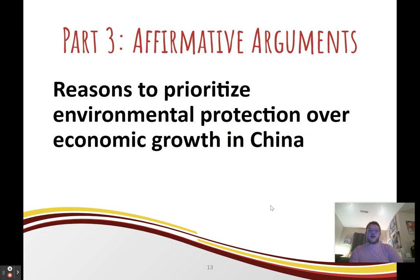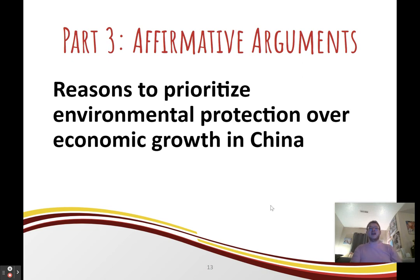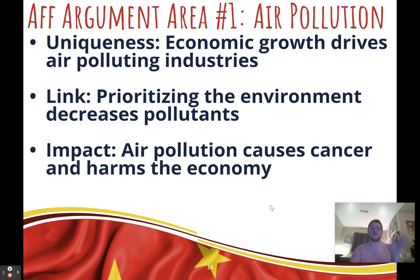Now let's talk about the best affirmative arguments. I have ten ideas listed in alphabetical order — not best to worst. Each argument is a reason why we must prioritize environmental protection over economic growth in China. Keep in mind the affirmative might argue that environmental protection creates economic growth, but you must show that if it's a choice between the two, we must choose environmental protection. Be ready to explain why each argument forces a choice, or the negative will say you're just arguing the environment is important without proving prioritization. Each argument follows a uniqueness-link-impact structure.